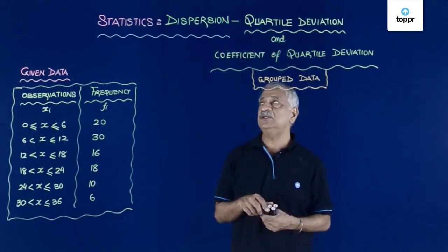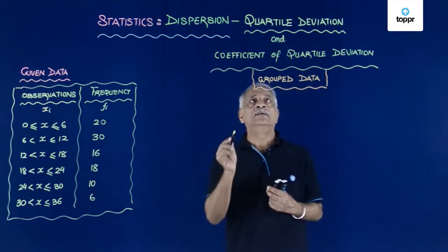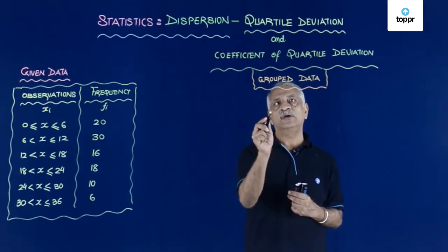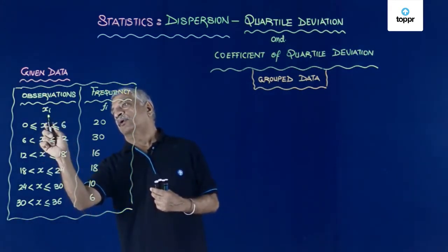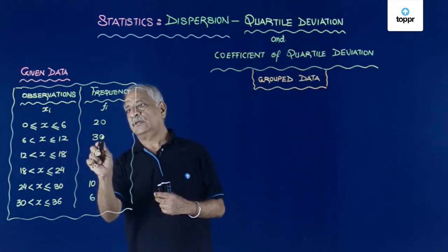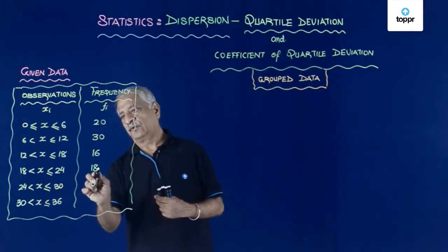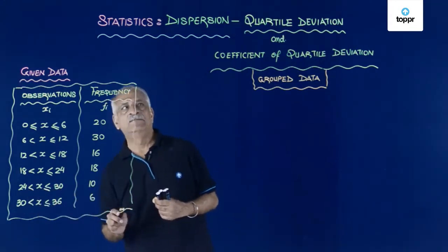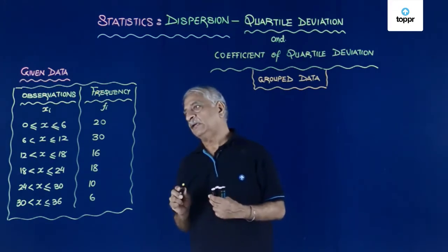Hello students, in this session of statistics under the concept of dispersion, let us understand the quartile deviation and coefficient of quartile deviation for grouped data. We are given grouped data as observations going from 0 to 6 with frequency 20, from 6 to 12 with frequency 30, from 12 to 18 frequency 16, from 18 to 24 frequency 18, 24 to 30 is 10, and 30 to 36 is 6. We wish to find out what is the quartile deviation and coefficient of quartile deviation.